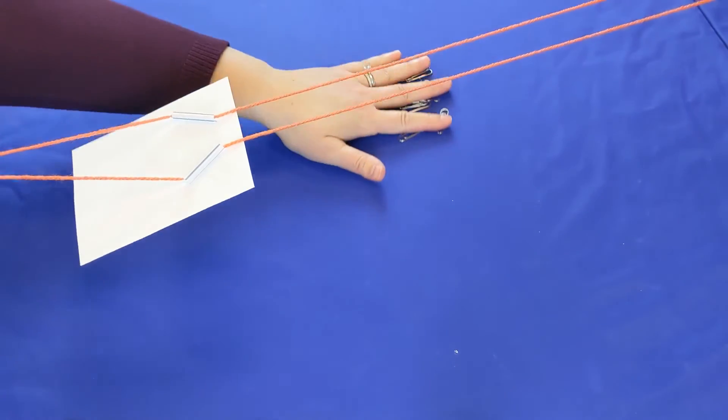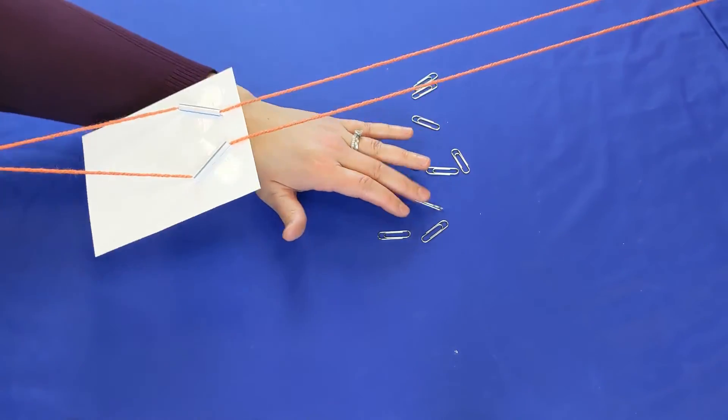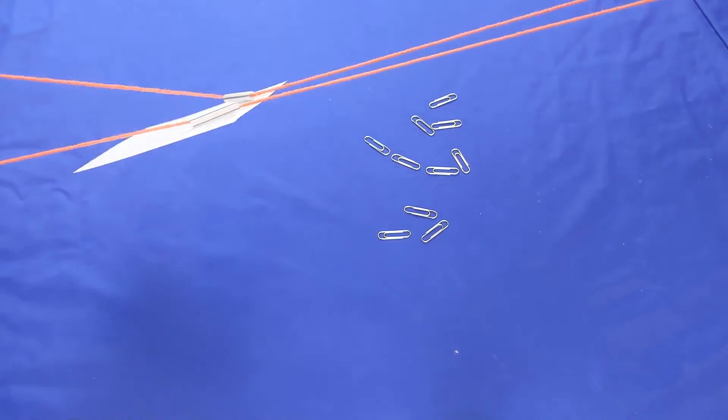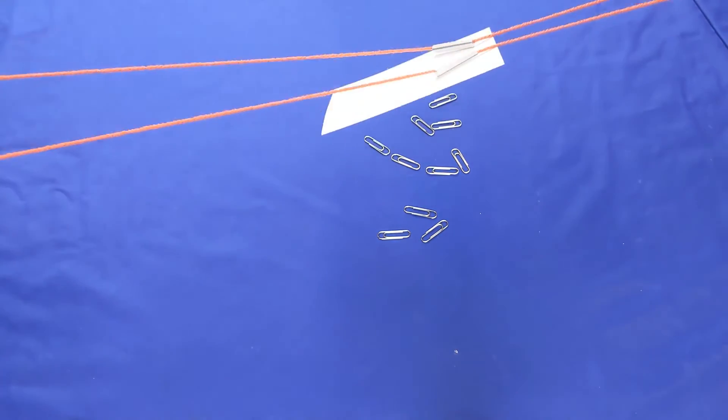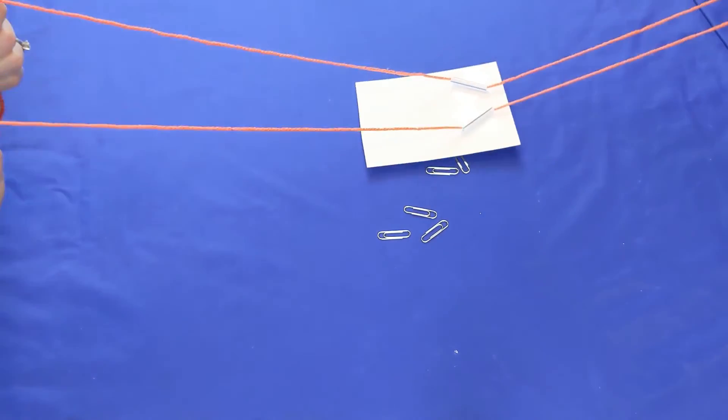Take the paper clips from the kit and scatter them across the floor or the table. Now you can move your slider and once you get over the paper clips, just release your tension on the string to lower the slider down and see if you can pick up any paper clips.